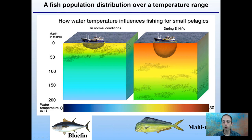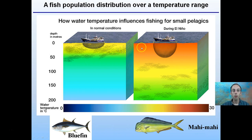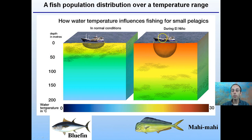Fish populations distribute over a temperature range. We're looking at how water temperature influences fishing for small pelagic species. Bluefin tuna and mahi-mahi are pelagic species. In normal conditions, most of the fish are about 50 meters down from the surface. But during an El Niño, where we have increased water temperature, these pelagic species enjoy a certain water temperature, so they'll be found much deeper in the water column. For a fisherman using a net, during normal conditions there's no problem, but during El Niño, because those fish go deeper seeking similar water temperature, the net is unaffected.